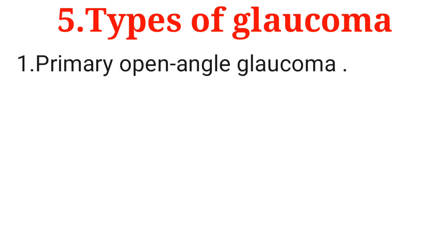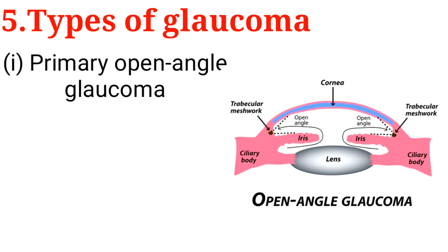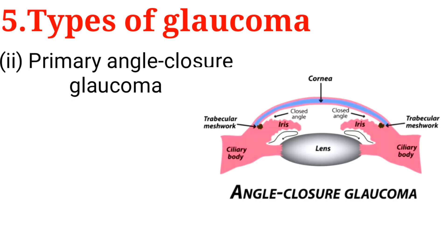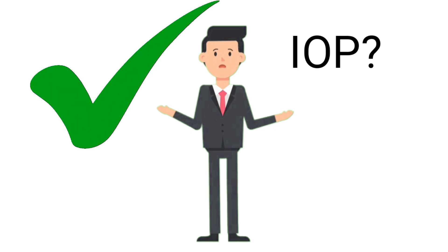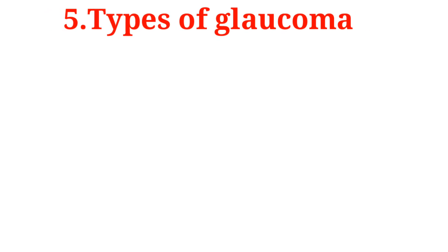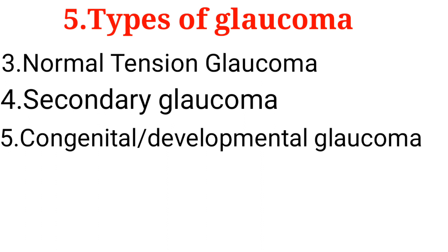Additional tests include gonioscopy to examine the angle of the anterior chamber, and pachymetry to check the thickness of the cornea. The two most common types of glaucoma are primary open angle glaucoma and primary angle closure glaucoma. In primary open angle glaucoma, the angle of the anterior chamber is open, yet aqueous humor doesn't flow out normally. In primary angle closure glaucoma, the angle of the anterior chamber is narrow or even closed, which also leads to a rise in IOP. Other types include normal tension glaucoma, secondary glaucoma, and congenital or developmental glaucoma.